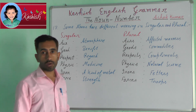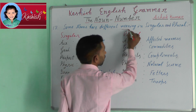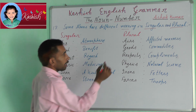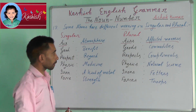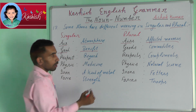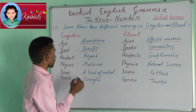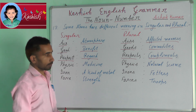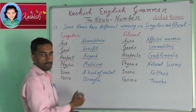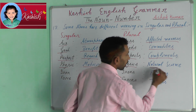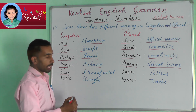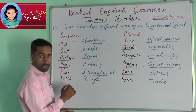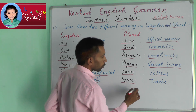Seventeenth rule: some nouns have different meanings in singular and plural. For example: air (singular) means atmosphere; airs (plural) means affected manner. Good (singular) means benefit; goods (plural) means commodities. Respect (singular) means regard; respects (plural) means compliment. Physics (singular) means medicine; physics (plural) means natural science. Iron (singular) means a kind of metal; irons (plural) means fetters. Force (singular) means strength; forces (plural) means troops.